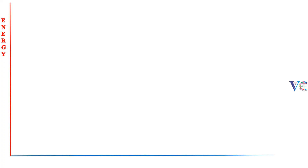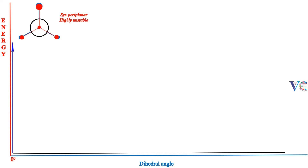Now let us observe the plot of potential energy against dihedral angle of various conformers of N-butane. Let us start with the highly unstable syn-periplanar conformer, whose dihedral angle is 0 degrees. Rotation of C2 in the syn-periplanar conformer by plus 60 degrees gives the plus synclinal conformer.